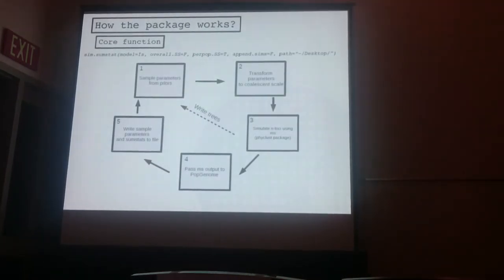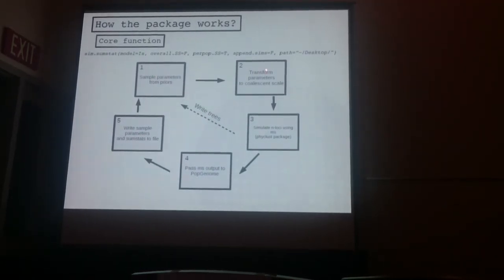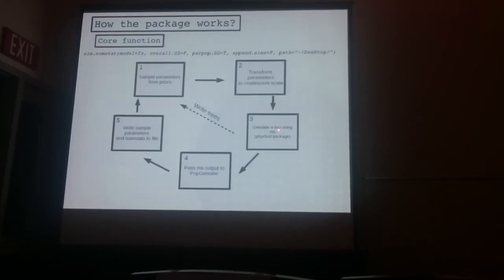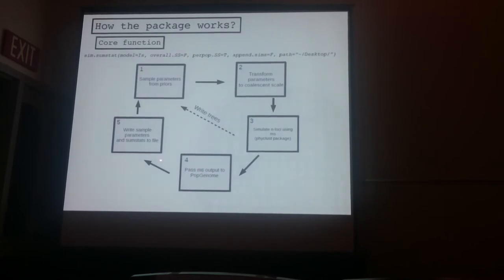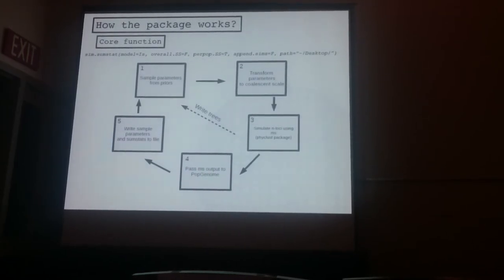The main function works like this: you sample parameters from priors, transform parameters to coalescent scale, simulate gene trees using MS, then pass MS output to PopGenome to calculate summary stats and write the summary stats to a file.